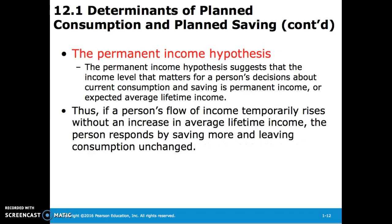The permanent income hypothesis suggests that the income level that matters for a person's decisions about current consumption and saving is permanent income, or the average expected lifetime income. So if a person's flow of income temporarily rises without an increase in average lifetime income, the person responds by saving more and leaving consumption unchanged.